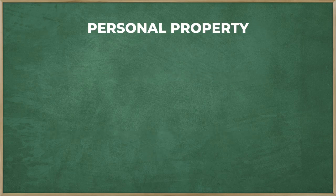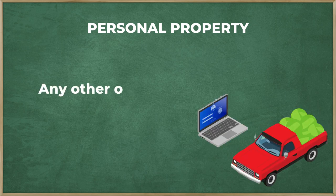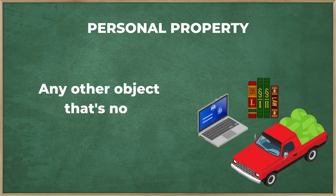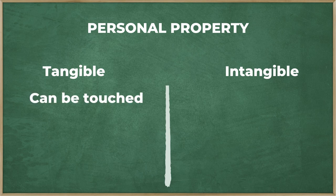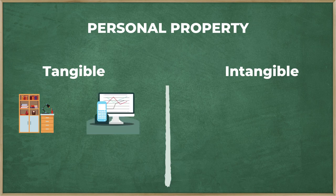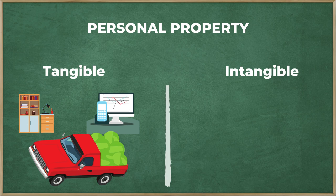Now we go to the easier one. Personal property is any other object that can be owned but cannot be classified as real property. Personal property are objects that can be moved and can be classified only as tangible or intangible. Tangible property are items that can be physically felt or touched — you can also read on this as chattels. Examples include office furniture and office supplies, business equipment, business vehicles, and other movable business goods and materials.